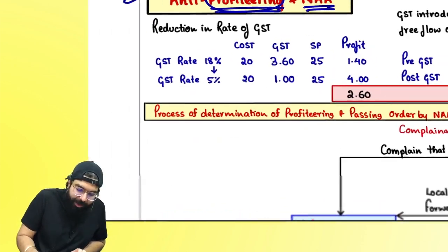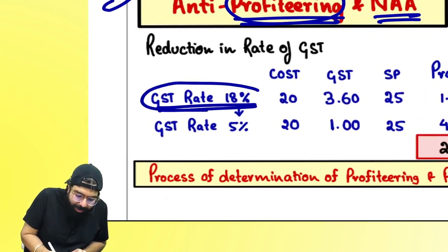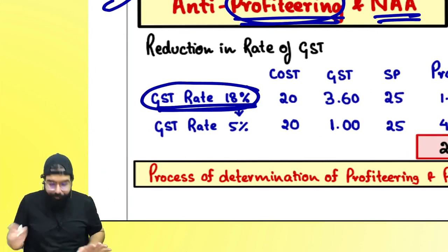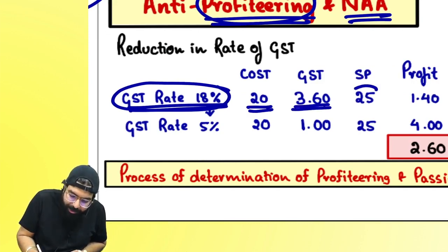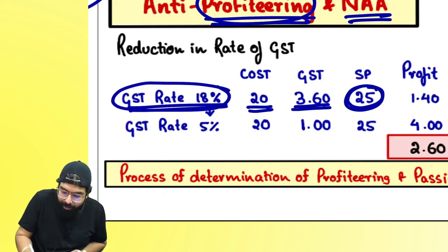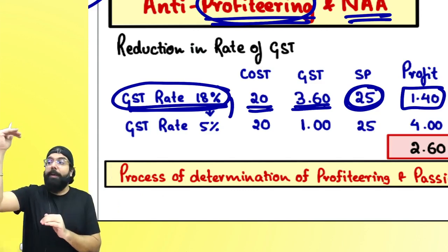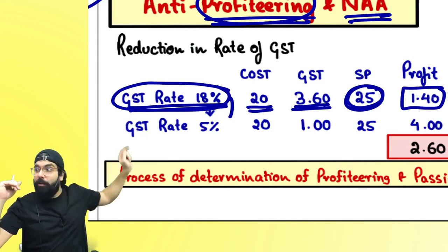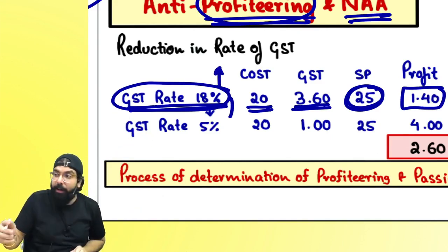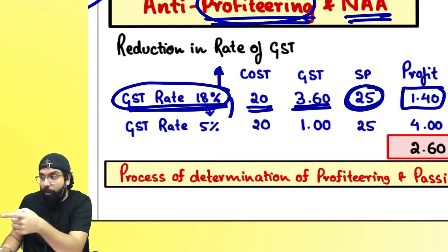What do you mean by profiteering? GST rate on food items — earlier when GST came it was 18%. You went to uncle to have masala dosa. Uncle told 20 rupees, plus he charged 18% GST, so he charged 25 rupees. He was making 1 rupee 40 paisa profit. If the GST rate is reduced by the government, will he reduce the price immediately? Yes.